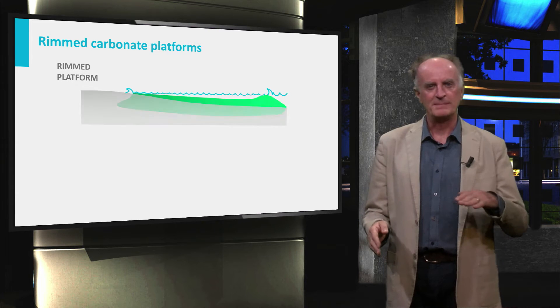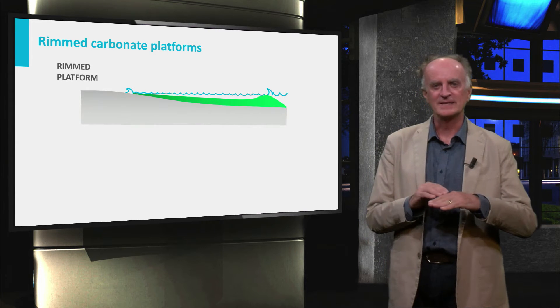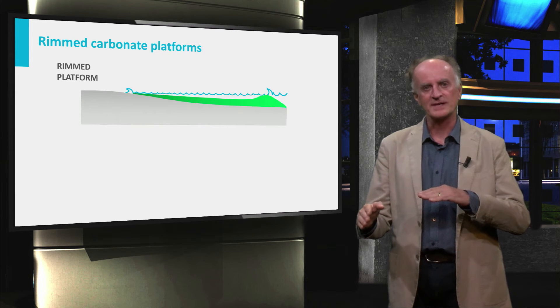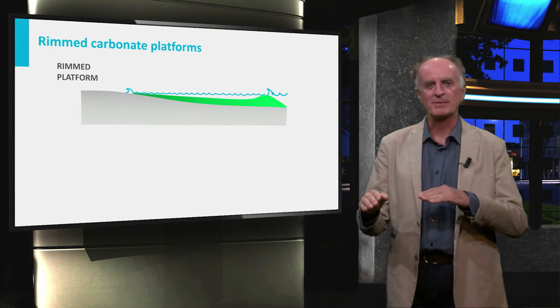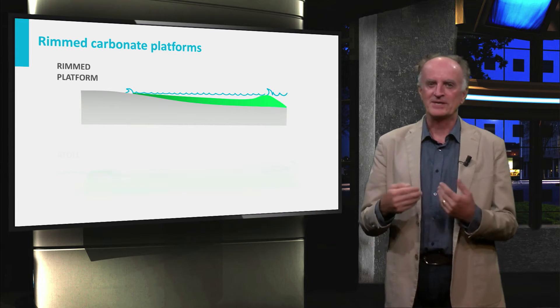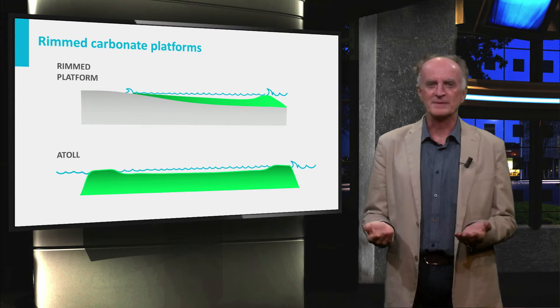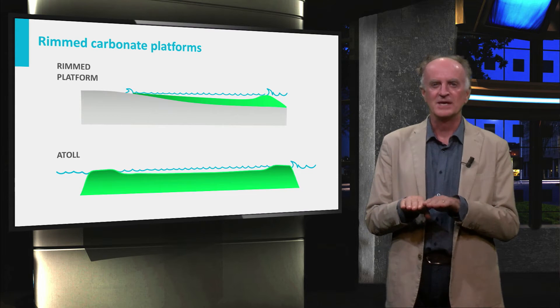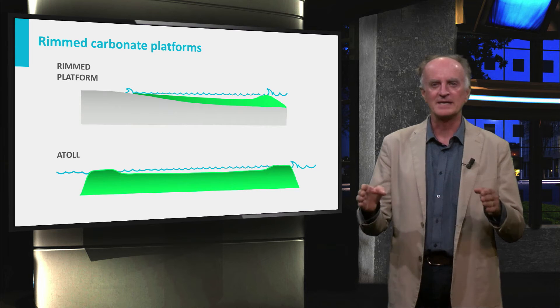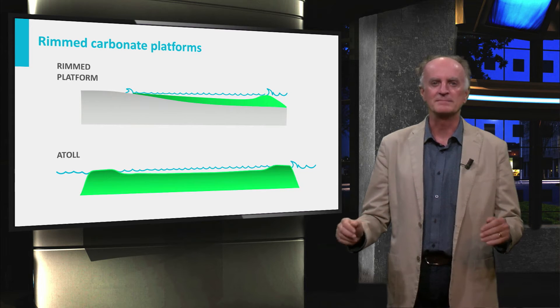Rimmed platforms can be attached to the continent on one side and bounded by a steep rim on the other side. From here the platform passes rapidly to the deep sea. A particularly interesting case is that of atolls, or isolated platforms, which are fully detached from the continents and limited on both sides by strong and steep rims.